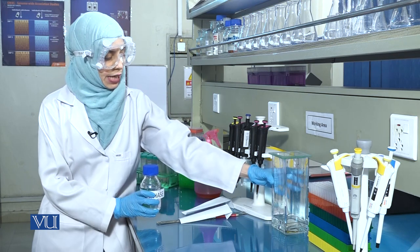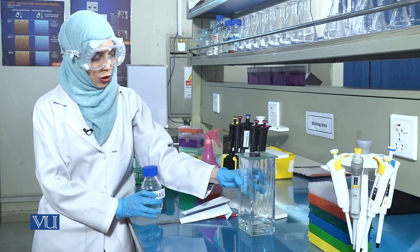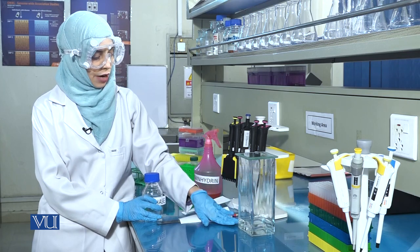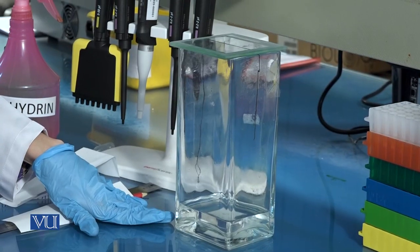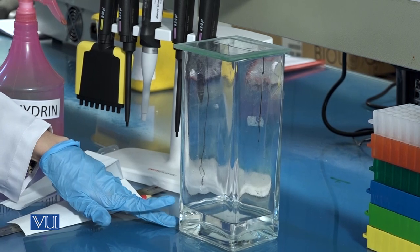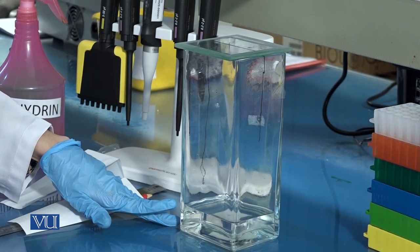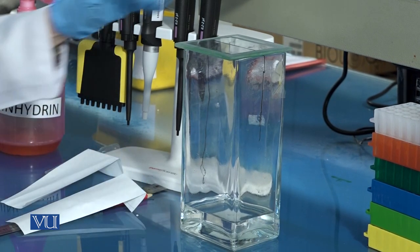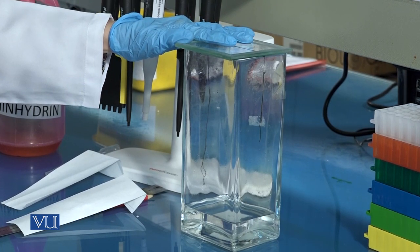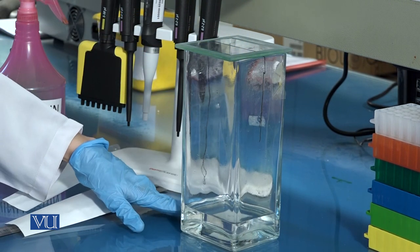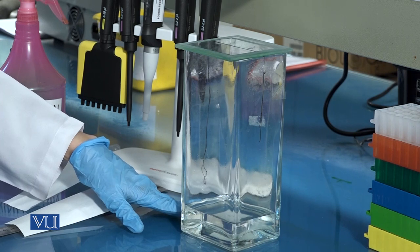Take a chromatography tank and add the solvent to it, ensuring that it covers the base of the tank, forming a layer half to one inch in thickness. Cover the tank and allow the atmosphere to get saturated with vapors of the organic solvent or mobile phase.